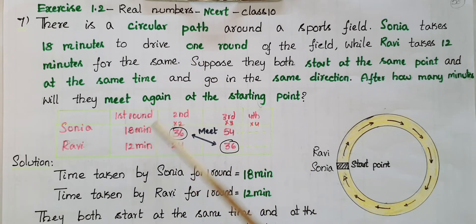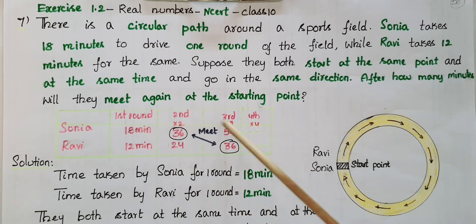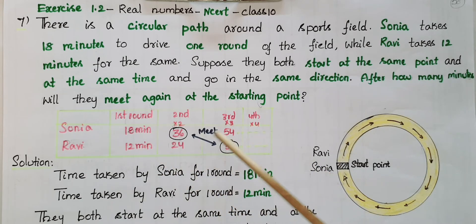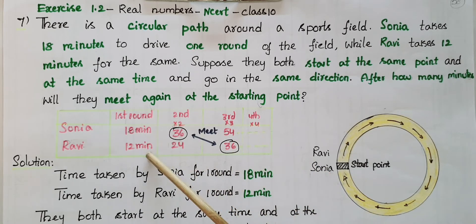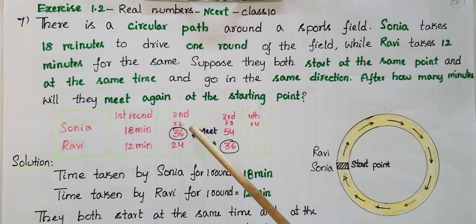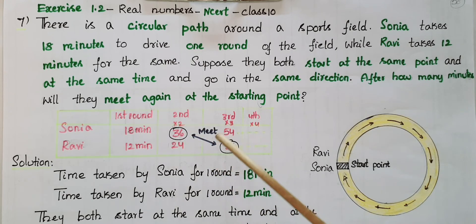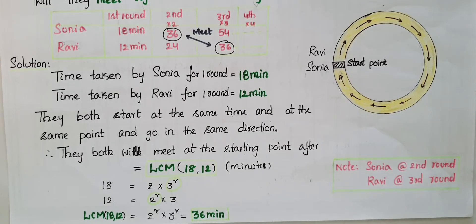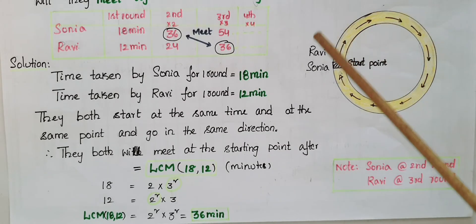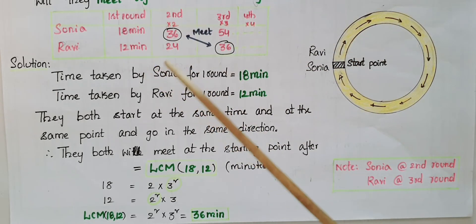The multiples 18, 36, 54 are multiples of 18, and 12, 24, 36 are multiples of 12. So this is the least common multiple of these two numbers. You have to find the LCM of 12 and 18.